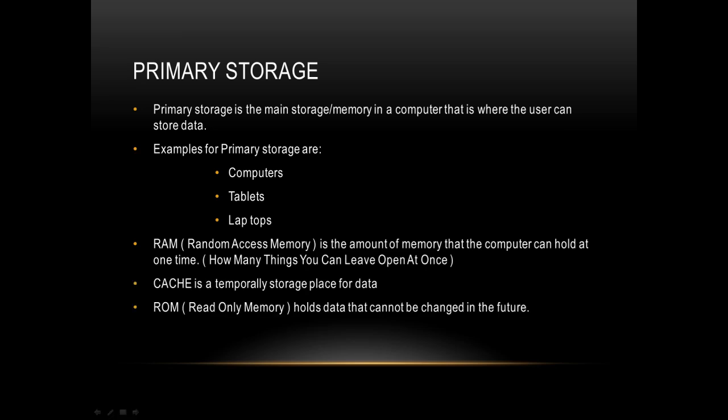Random Access Memory is the amount of memory that a computer can hold at one time, or in other words, how many things you can leave open at once. Cache is a temporary storage place for data. Read-only memory holds data that cannot be changed in the future.